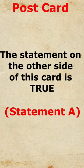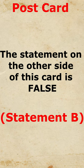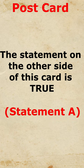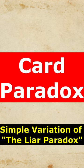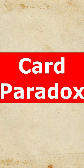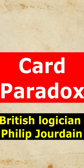Conversely, if statement A is false, then statement B must also be false, which in turn necessitates statement A to be true. This conundrum is known as the card paradox, a straightforward variation of the liar paradox introduced by the British logician Philip Jourdain.